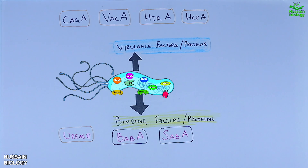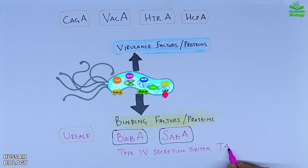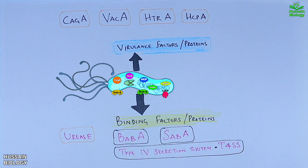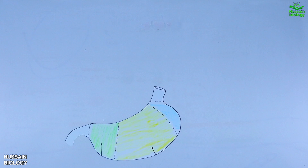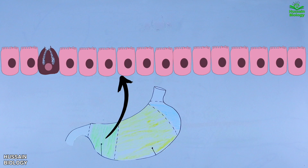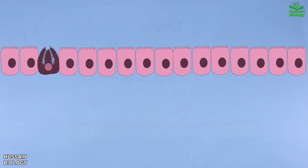The fourth one is the type 4 secretion system — T4SS. Now let's get to the mechanism of pathogenesis. Here in this diagram we have the stomach; if we zoom into its epithelium, we have the gastric epithelium with different kinds of cells embedded in between. These epithelial cells secrete a mucus layer, as shown in the diagram.